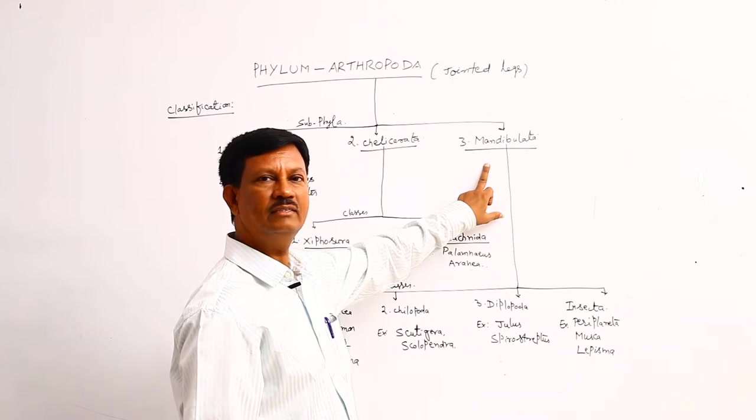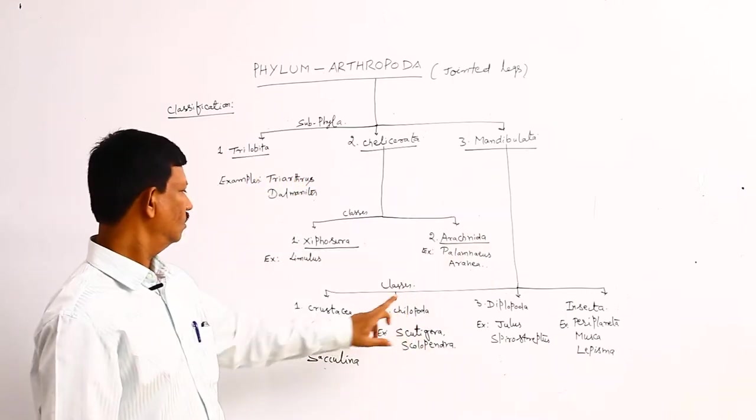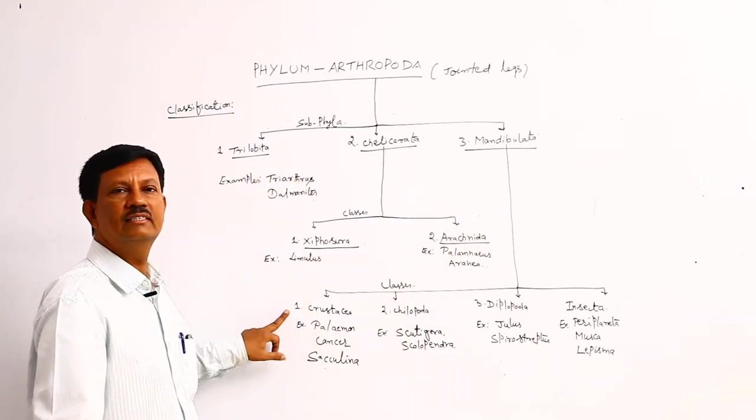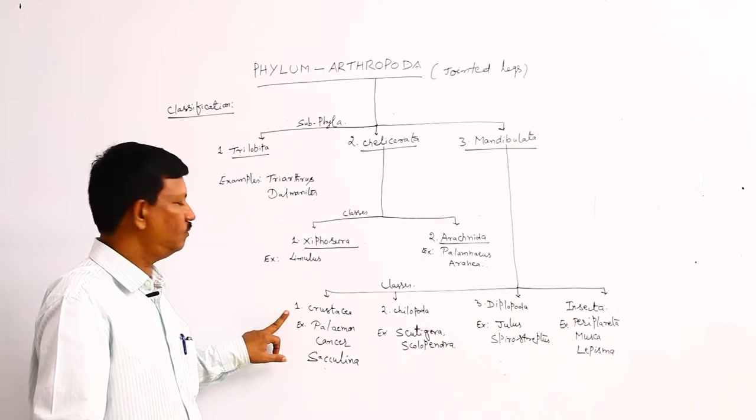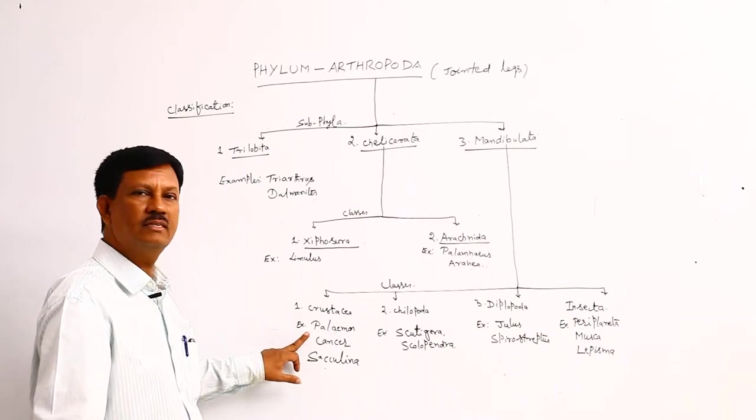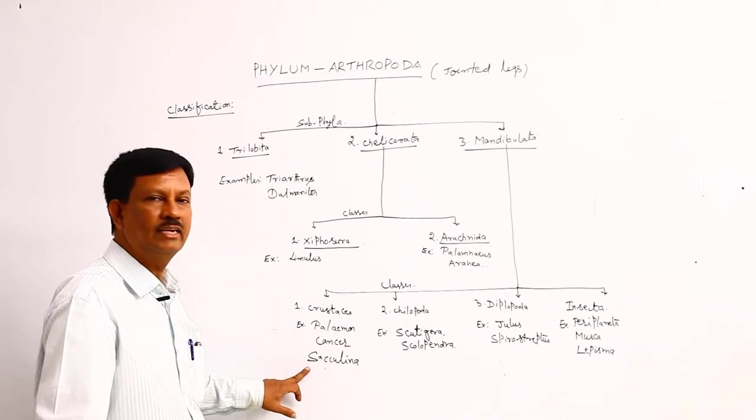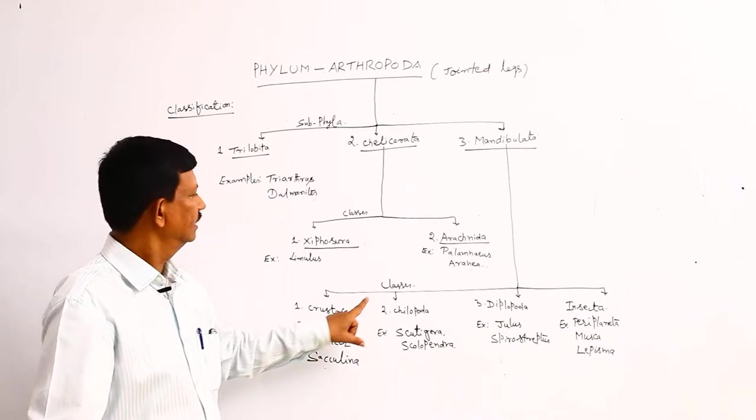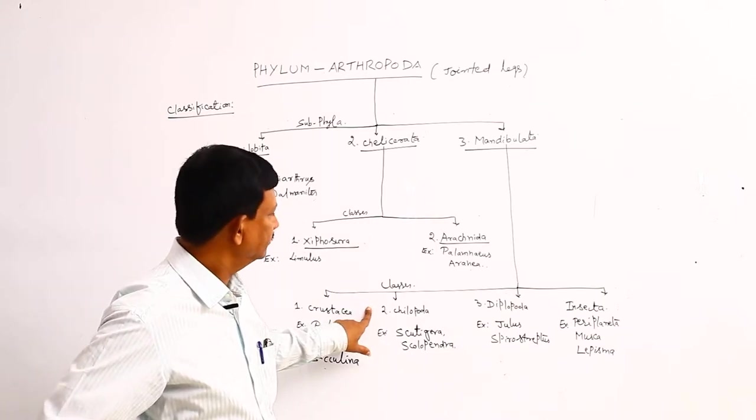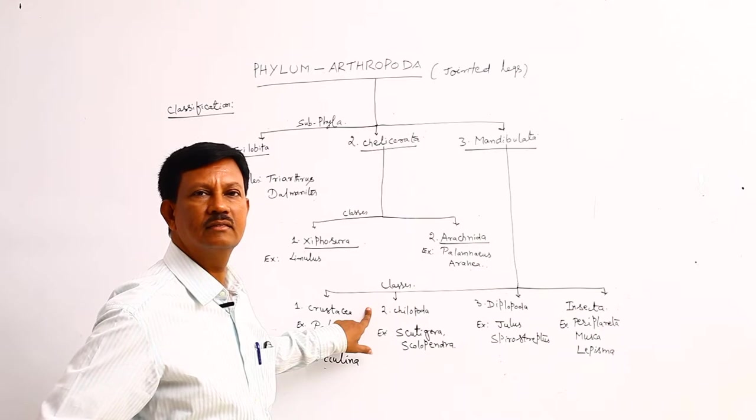Mandibulata is divided into four classes. One is the Crustacea, these are mostly found in the natural freshwater. Example is Palamnius, freshwater prawn, Cancer, its common name is crab, and Saculina. And Chilopoda.